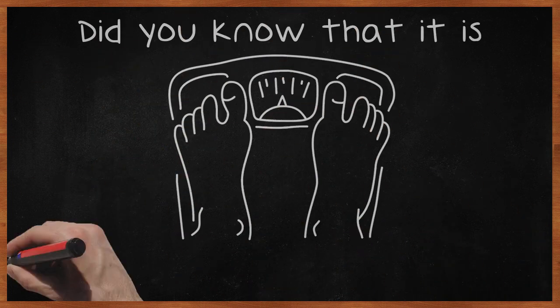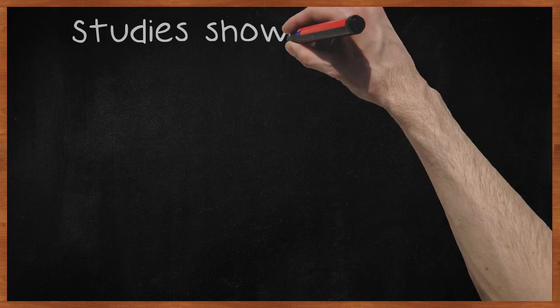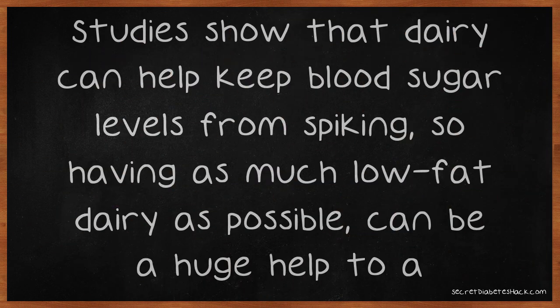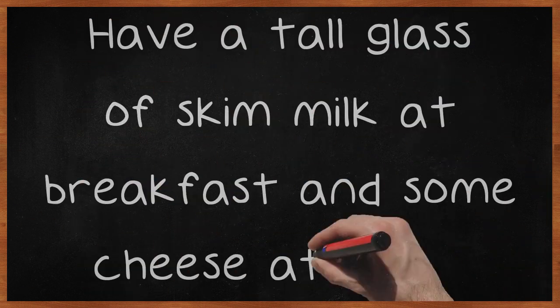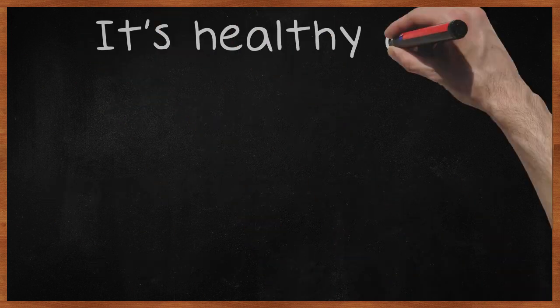Did you know that it is recommended that diabetics have a diet high in dairy? Studies show that dairy can help keep blood sugar levels from spiking, so having as much low-fat dairy as possible can be a huge help to a diabetic. Have a tall glass of skim milk at breakfast and some cheese at lunch. It's healthy and tasty.